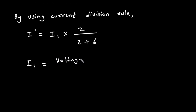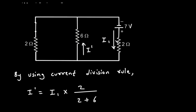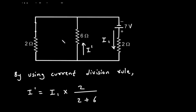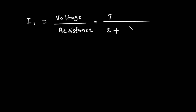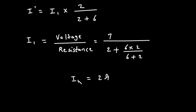Current I1 equals voltage divided by resistance. The value of voltage is 7V, divided by the total resistance of this circuit. The 2 ohm is in series with the parallel combination of 6 ohm and 2 ohm, so it is 2 plus (6 × 2)/(6 + 2). Therefore, current I1 is equal to 7 divided by [2 + (6 × 2)/(6 + 2)], which equals 2 ampere.